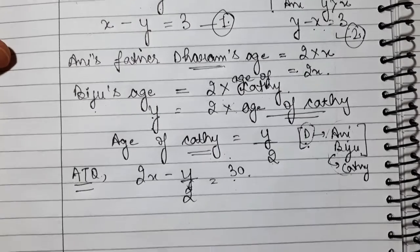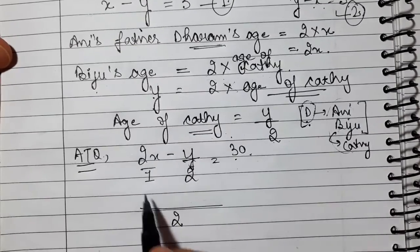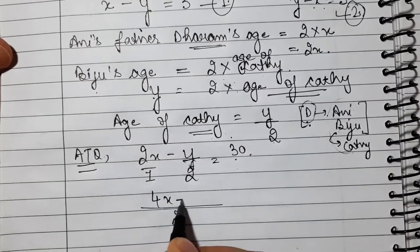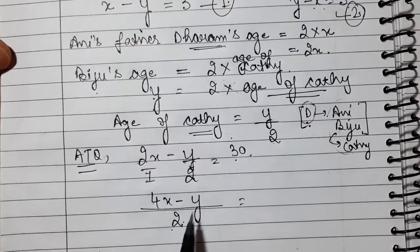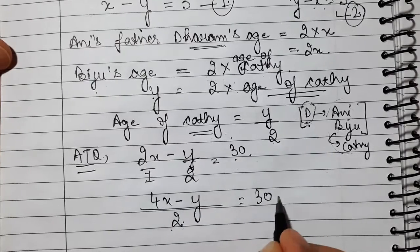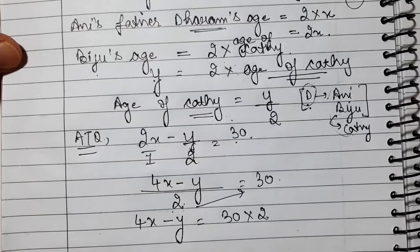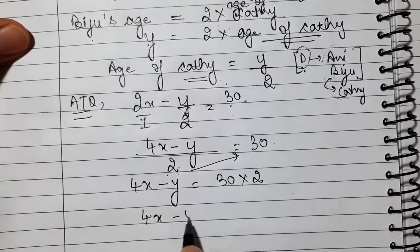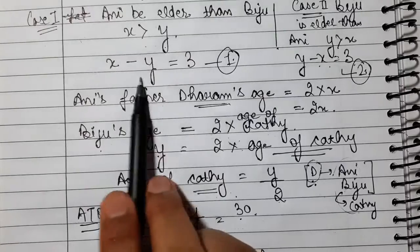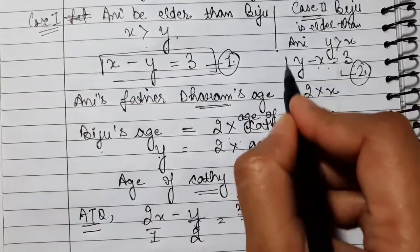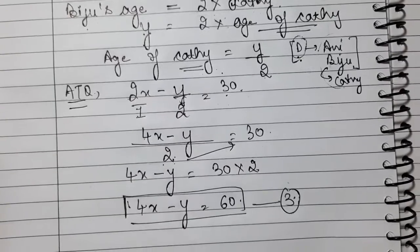Now we have to solve this a little bit. This will become a linear equation. The LCM of 1 and 2 is 2. Multiplying through: 2 into 2X is 4X, and 2 into Y/2 is Y. So the equation becomes 4X minus Y equals 60. This is equation number 3.